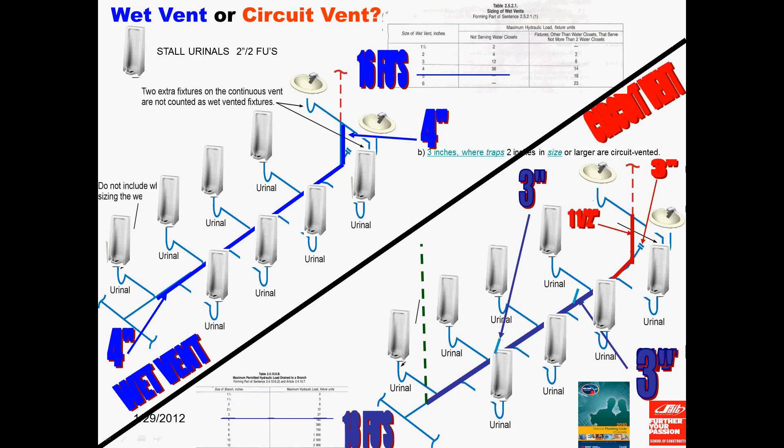Hence, this is why we circuit vent a battery of commercial fixtures over wet venting them. Because we don't have a bunch of 2x6 walls in every building, we would prefer to put an inch and a half pipe draining downstream of the double Y under the 2 lavs for a 2x4 wall. So, that is one advantage of circuit venting.